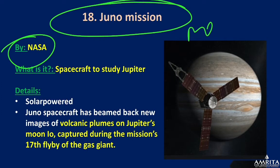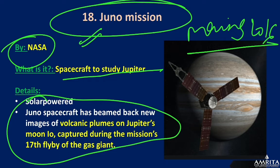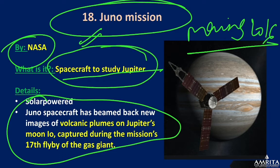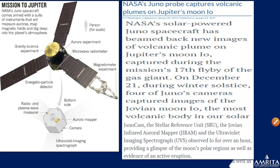Juno Mission: NASA's spacecraft studying Jupiter — it is solar powered. The Juno spacecraft has beamed back new images of volcanic plumes on Jupiter's moon Io, captured during its 17th flyby of the giant planet. Remember two key points: Juno mission studies Jupiter, and Jupiter's two most important moons are Io and Europa.